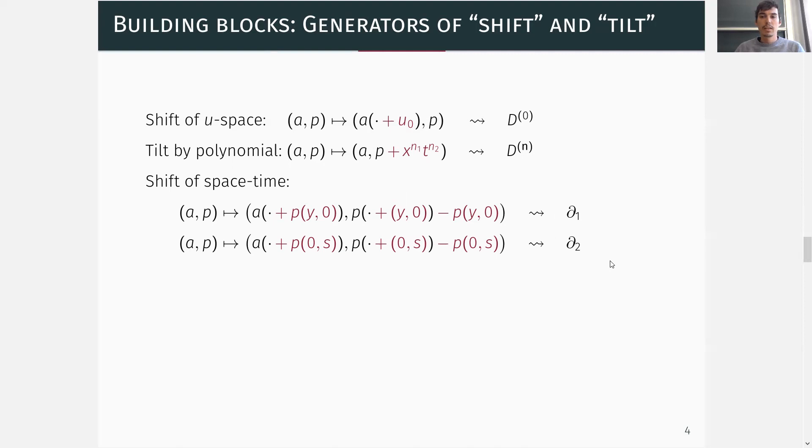However, as I told you before, for recentering, we also need a shift and tilt that depends on the non-linearity, or in this case, on the pair (A,P) itself. For this, let me first introduce some coordinate functionals.